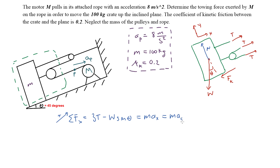Our goal is to find the acceleration of the crate, which is probably the most difficult part of this problem. We are given the acceleration of point P. We need to relate the acceleration of point P to the acceleration of the crate by creating datums and summing the lengths of the rope, then taking time derivatives.